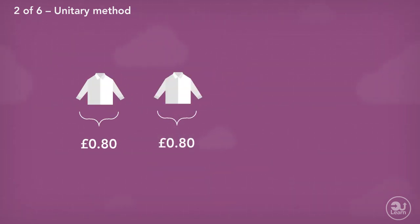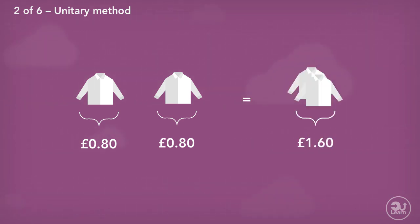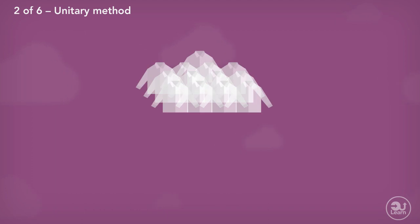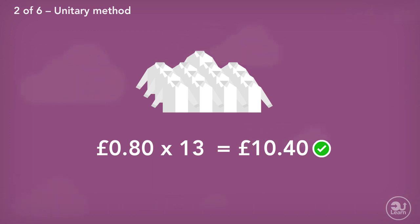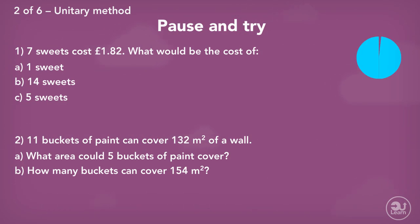Two shirts would therefore cost £0.80 times 2, which equals £1.60. And 13 shirts would cost £0.80 times 13, which equals £10.40. Using this method and bar models, have a go at these questions.